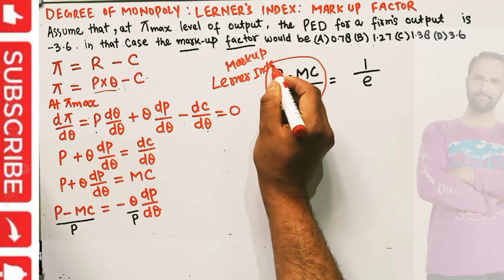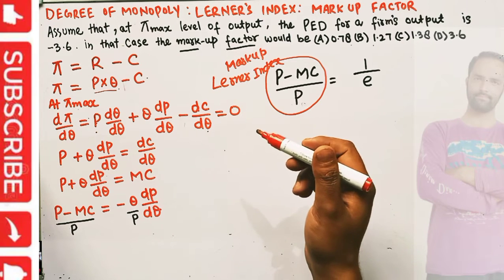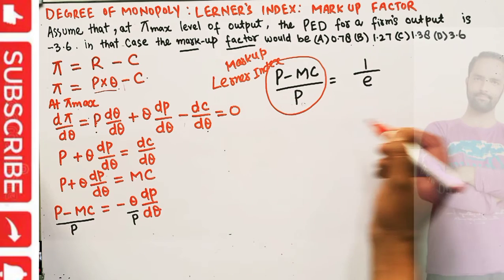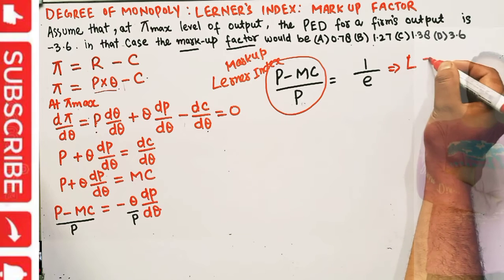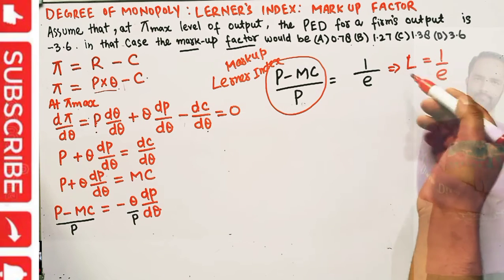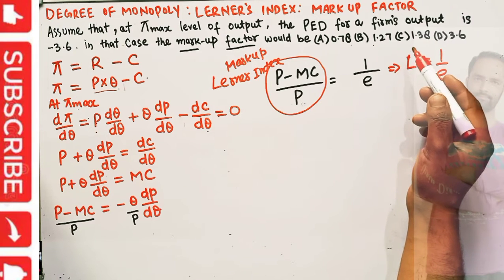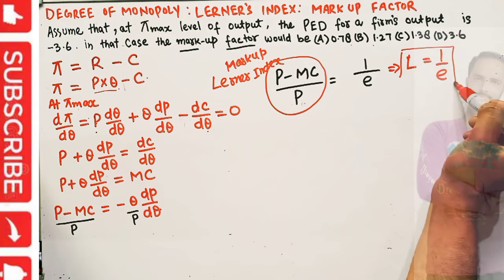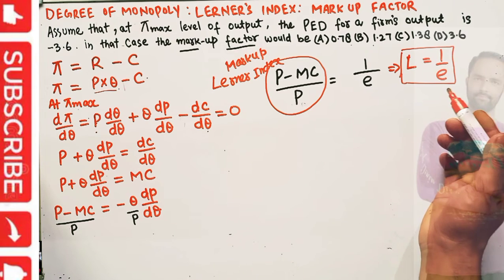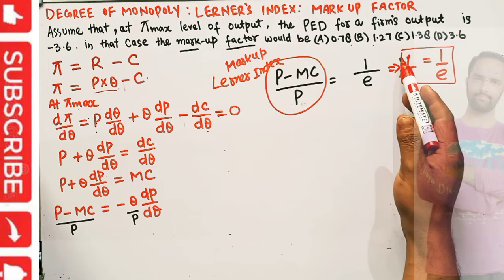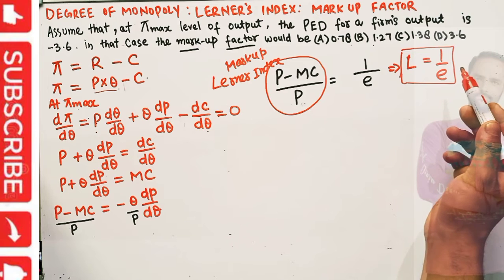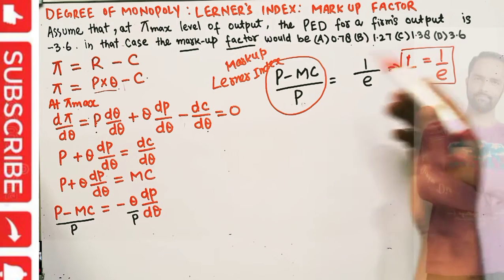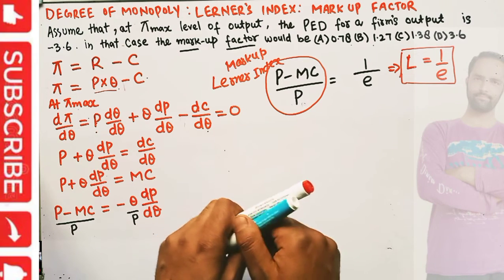This is the Lerner's Index: L = 1/|e|. There is an inverse relationship between the Lerner's Index and price elasticity of demand. Higher the Lerner's Index, the more the firm charges above marginal cost, meaning greater monopoly power. With inelastic demand we have more monopoly power; with elastic demand, monopoly power is less.